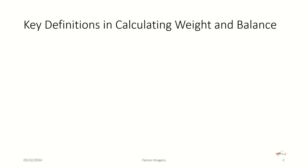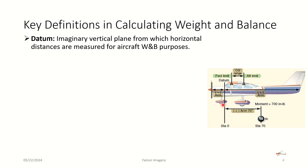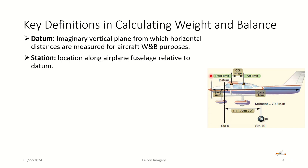In order to do weight and balance, we need to go over the key definitions. The first is the datum — the imaginary vertical plane from which horizontal distances are measured for aircraft weight and balance. The datum for this particular Cessna Skyhawk is at the firewall — an imaginary vertical plane that the aircraft manufacturer uses for referencing all weight and balance calculations. Stations are locations along the airplane fuselage relative to the datum. A station may be where the pilot and front passenger sit, the back passengers sit, the baggage area, and where the fuel is kept in the fuel tanks.